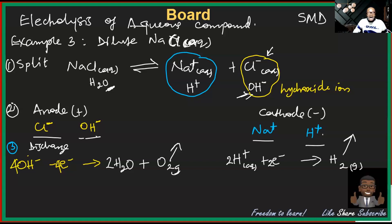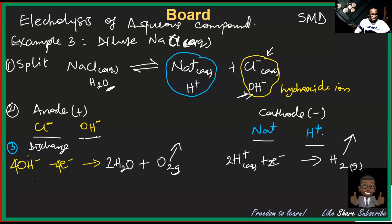Hydroxide is more concentrated in a dilute sodium chloride solution, so it is discharged. So at the end of electrolysis of dilute sodium chloride: hydrogen gas is produced at the cathode, oxygen gas at the anode. The last thing to know is what becomes of the electrolyte solution.